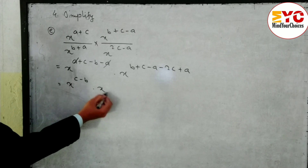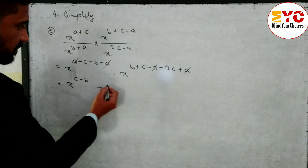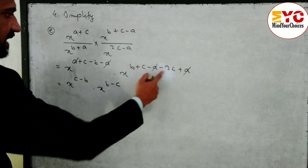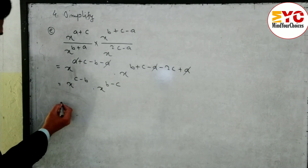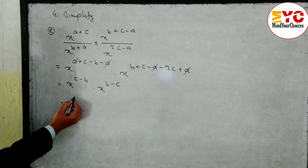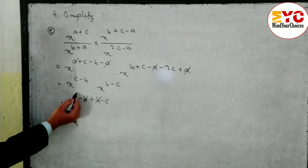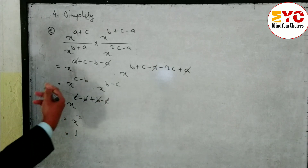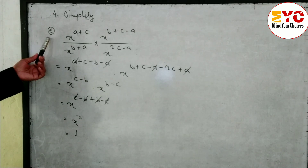After this, a and a cancel — remaining x power (c minus b). Then positive a and negative a cancel; b plus c minus 2c means minus c. So remaining x power (b minus c). Base same, in multiply add the power: x power (c minus b) plus (b minus c). b and b cancel, c and c cancel — remaining x power 0, which equals 1. Hope you understand question number (e).